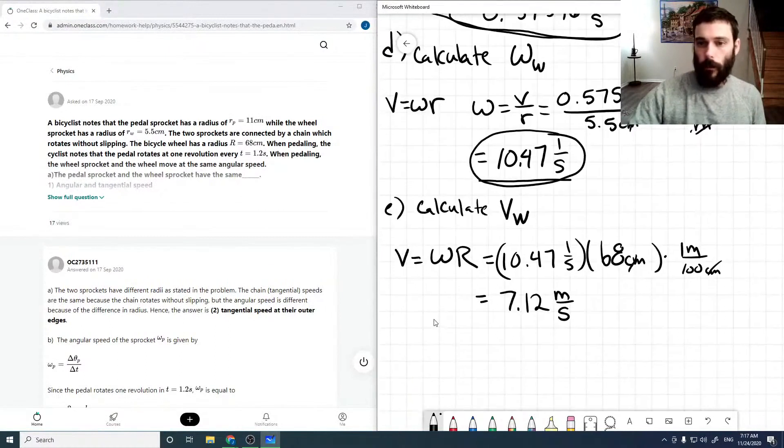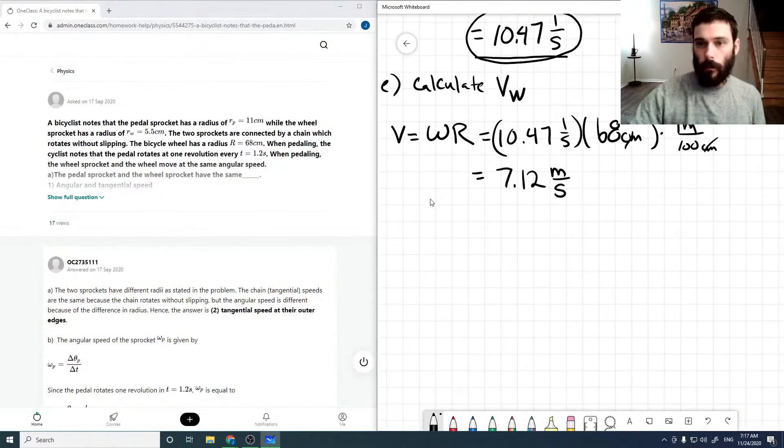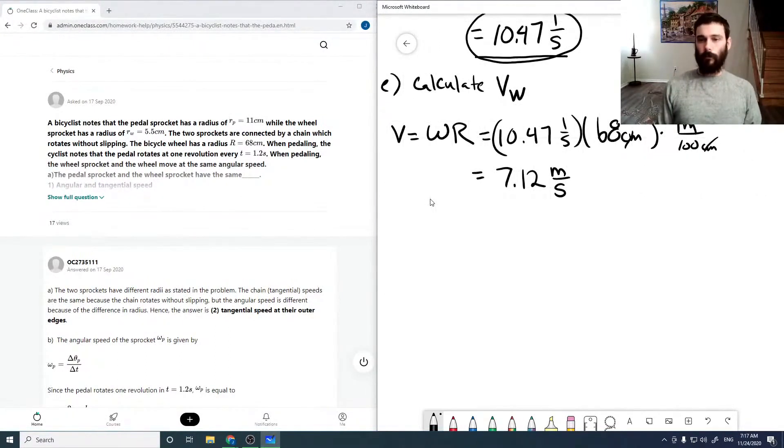Okay, and then the last part of this question asks, how fast or what would be the period for the pedal if we want V equals 6.0 meters per second. So, now we need to just go backwards.